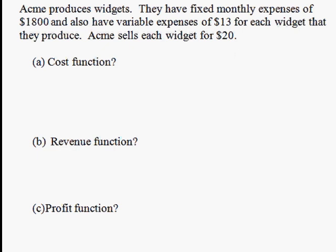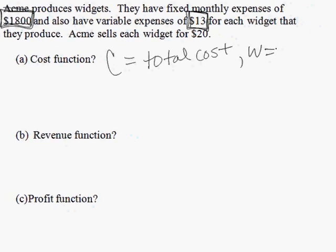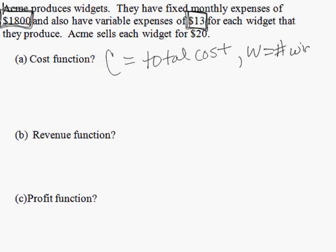Part A asks us to find a cost function for Acme. The cost function will be made up of fixed costs of $1,800, plus an additional $13 for each widget that they produce. So the output of the function is the total cost. The input of the function is the number of widgets that they make. The cost will depend on the number of widgets that they make.